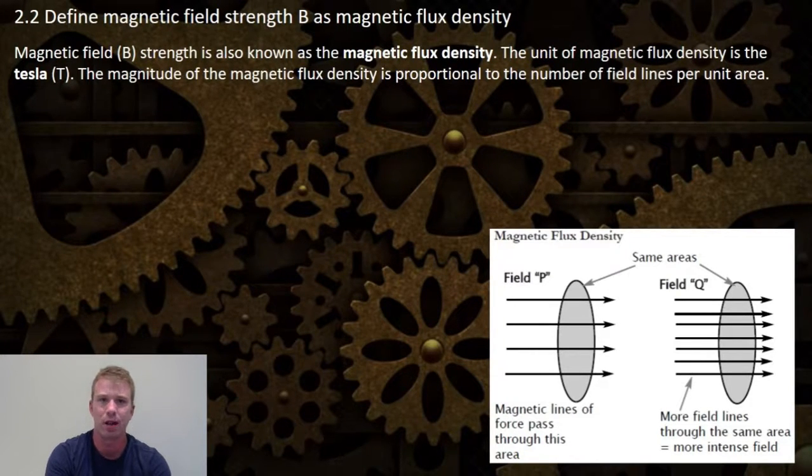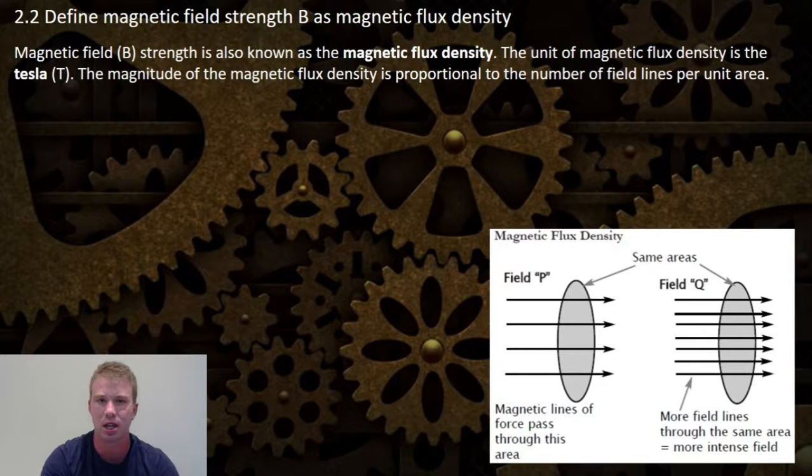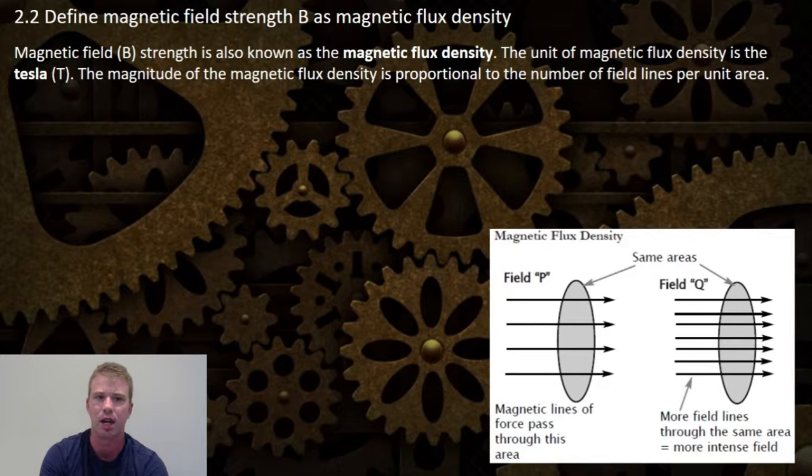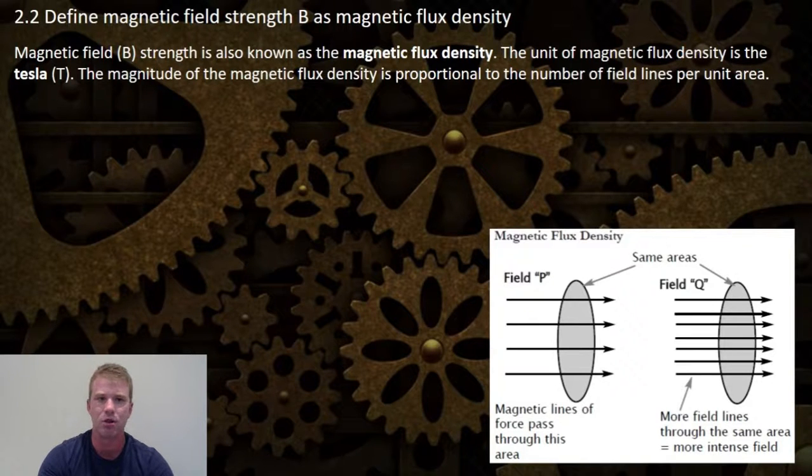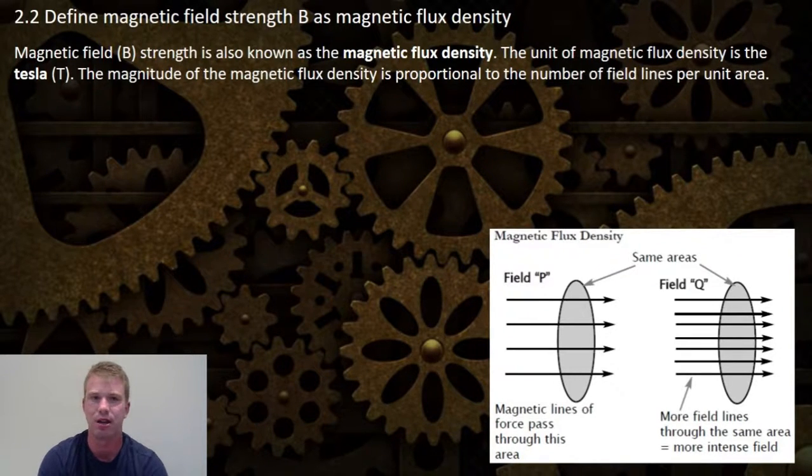The magnitude of the magnetic flux density is proportional to the number of field lines per unit area. You can see that on the bottom right-hand side in the diagram, which I will get you to copy in your books as well. The more field lines through the same area, the more intense that field will be.